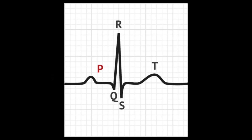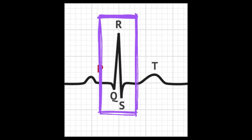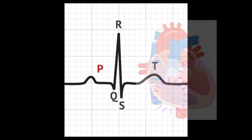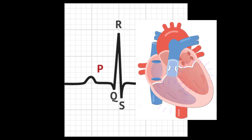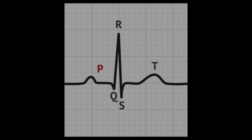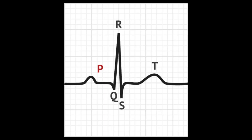The QRS complex is the second wave in a normal EKG strip and it represents the electrical activity that causes the ventricles to contract. To identify the beginning of the QRS complex, look for the first upward deflection of the wave on the EKG strip.